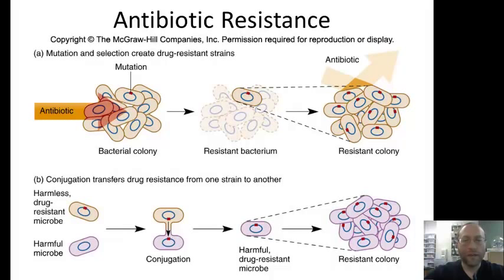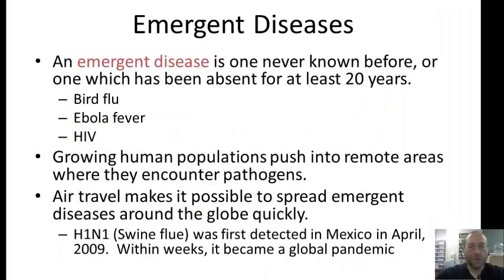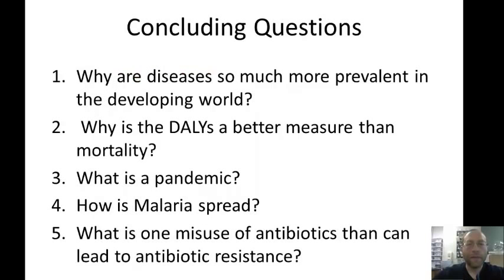Emergent diseases are those that are new to our species or which have been absent for at least 20 years — bird flu, Ebola fever, and HIV are examples. Growing human populations push into remote areas and encounter new pathogens, and air travel makes it possible to spread emergent diseases around the globe quickly. In 2009, H1N1 was first detected in Mexico in April and within weeks had spread across the entire world. Concluding questions: Why are diseases so much more prevalent in the developing world? Why are DALYs a better measure than mortality? What is a pandemic? How is malaria spread? What is one misuse of antibiotics that can lead to antibiotic resistance?